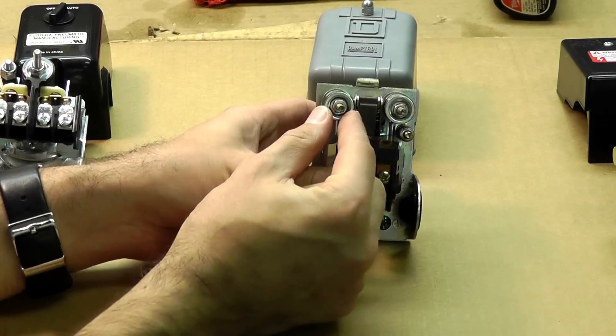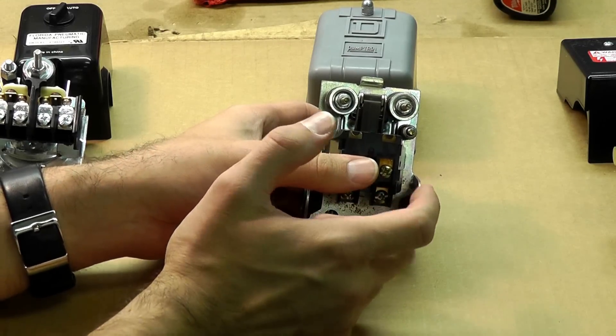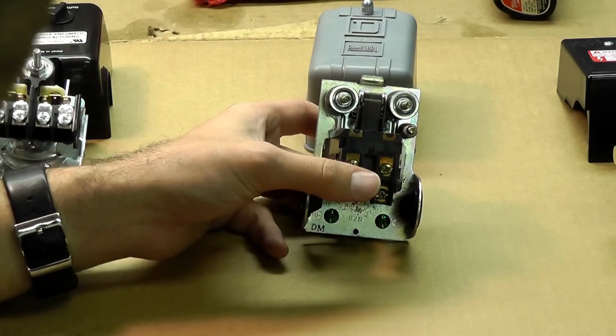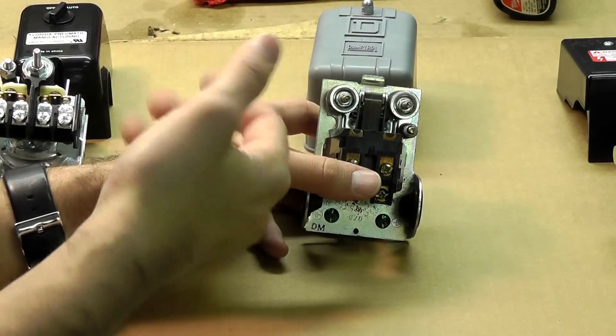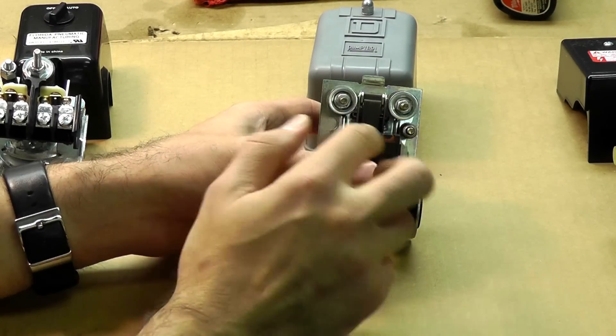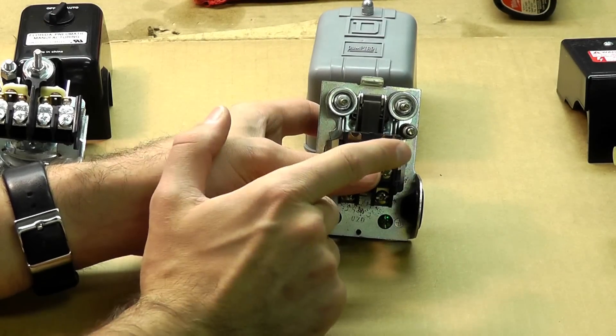So what you do is take this nut—you'll turn it clockwise to increase the cut-in pressure of the compressor. So it cuts in at 95 psi, 120 psi, what have you. This will adjust that. Turn it clockwise to increase the cut-in pressure, counterclockwise to decrease the cut-in pressure. That's what these two adjustments are.